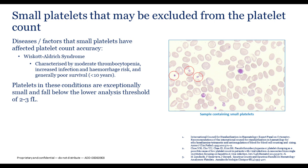Small platelets may also be excluded from the platelet count, as occurs in Wiskott-Aldrich syndrome. These tiny platelets generally fall below the lower threshold of 2–3 femtoliters and may be inadvertently excluded from the platelet count, resulting in a lower count than expected.